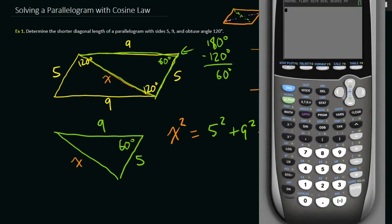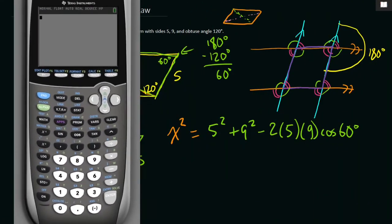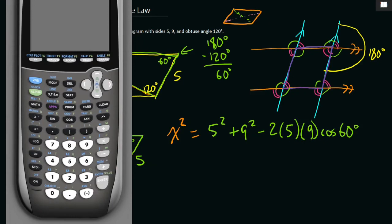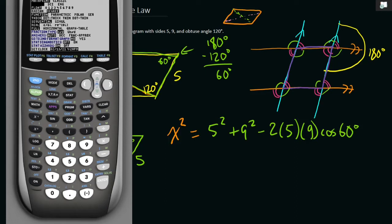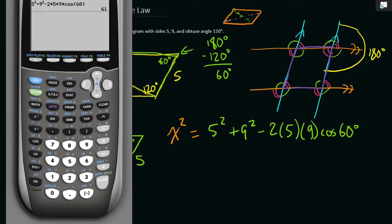Okay, time to pull up my calculator. I guess I'll move this over here. So x squared is 5 squared plus 9 squared minus 2 times 5 times 9 times cos 60, which is, just double check. As a note, I already know that I'm in degrees mode, but if you're not sure, make sure you're in degrees mode before you do this.